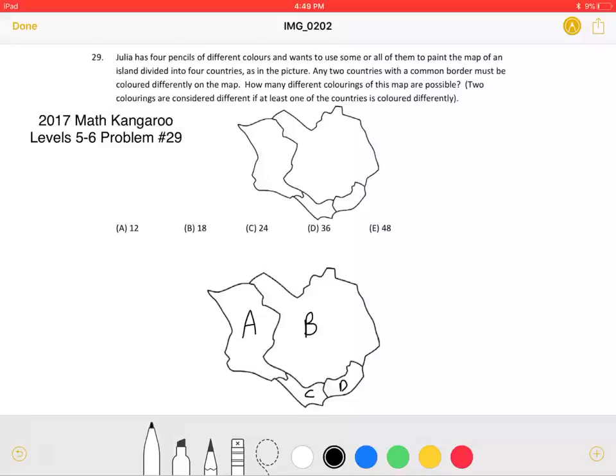Any two countries with a common border must be colored differently on the map. How many different colorings of this map are possible? Two colorings are considered different if at least one of the countries is colored differently.